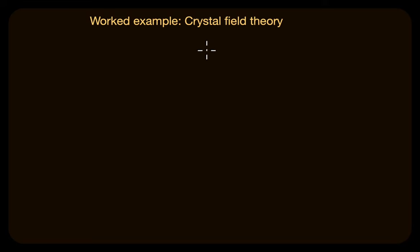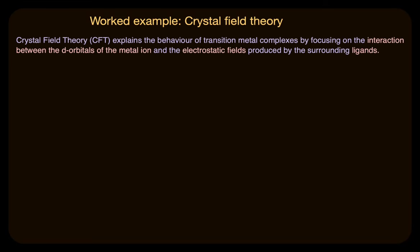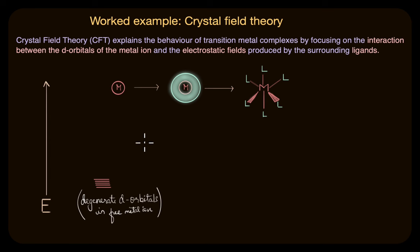Before we look at the question, let's take a short recap of crystal field theory. Crystal field theory helps explain the behavior of transition metal complexes by focusing on the interaction between the d-orbitals of the metal ion and the fields produced by the surrounding ligands. According to CFT, a metal ion, an isolated metal atom or an ion, has degenerate d-orbitals. That means all the five d-orbitals have the same energy. Here what you can see is the degenerate d-orbitals in a free metal ion that is not influenced by any sort of electrostatic interaction.